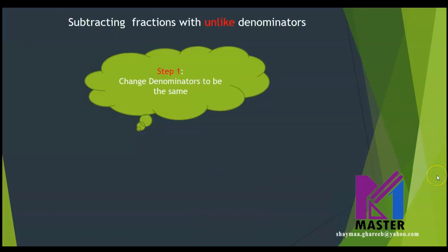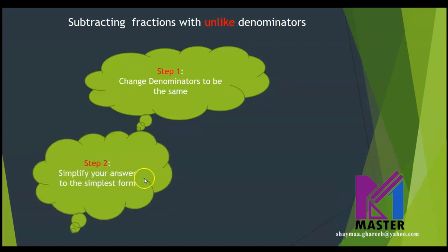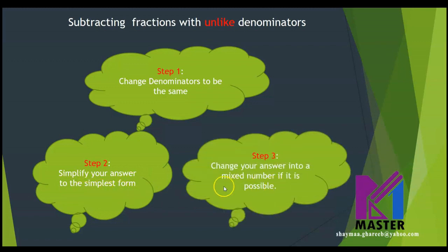Subtracting fractions with unlike denominators — we are going to follow the same rules exactly as adding fractions with unlike denominators. The first step: we have to change the denominators to be the same by using equivalent fractions. Then we subtract normally, then we simplify our answer to the simplest form, then we change the answer into a mixed number if it is an improper fraction.